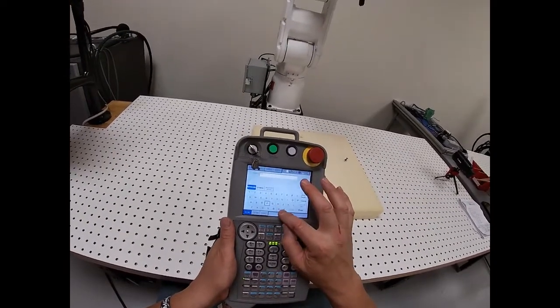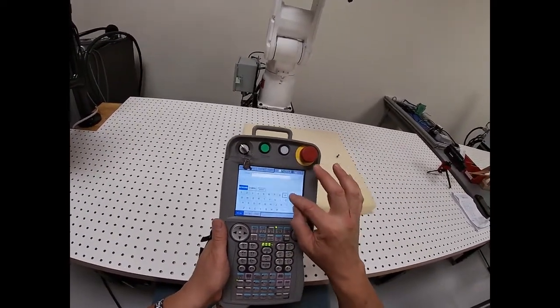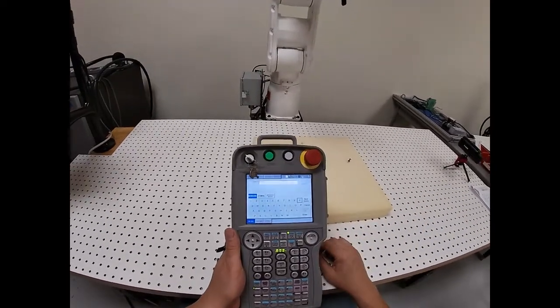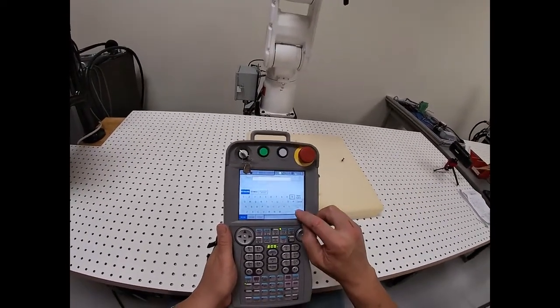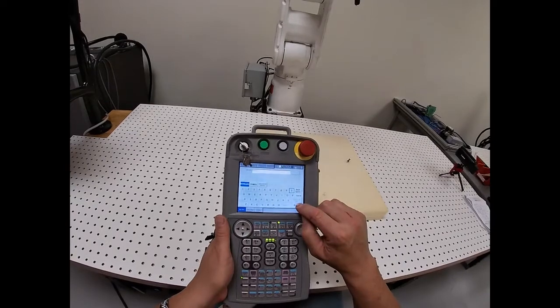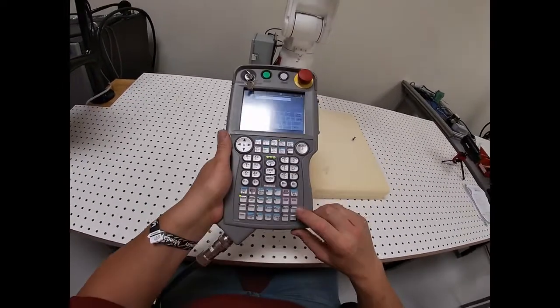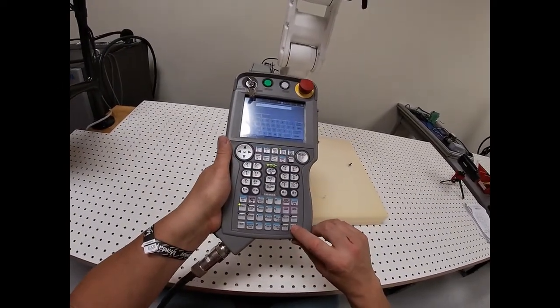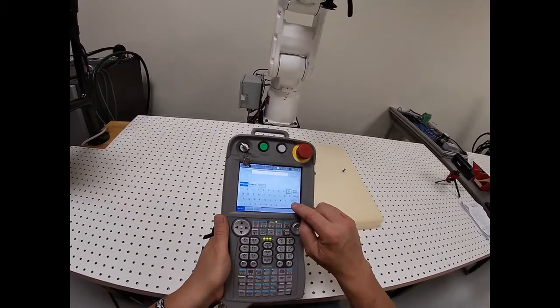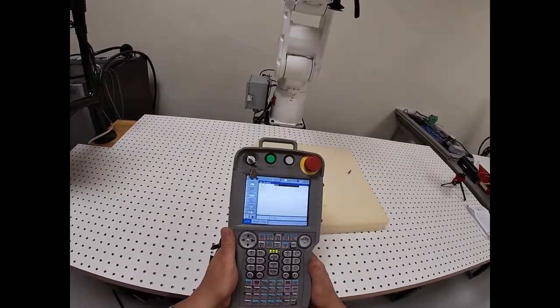I'm going to put my initials, nine, nine, zero. It doesn't really matter what your job name is. Then you always hit enter. You can hit enter on the screen here, or you can hit enter down at the bottom of your teach pendant. I'm going to hit enter on the screen because that's the way I like to do it.